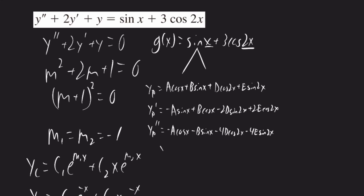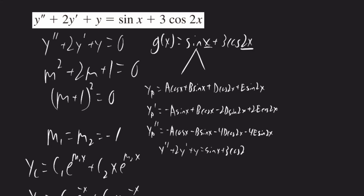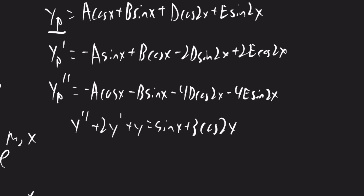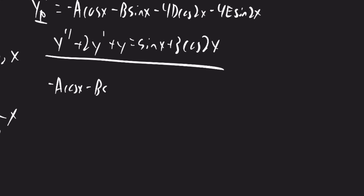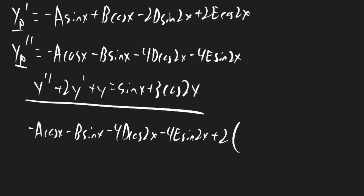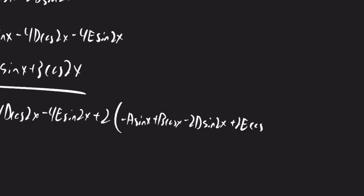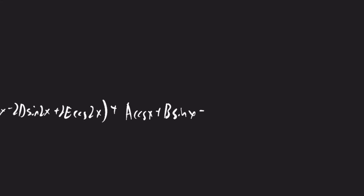The original differential equation was given as y double prime plus 2 times y prime plus y is equal to sine x plus 3 times cosine 2x. Because yp is a solution to this differential equation, we can plug in yp, yp prime, and yp double prime into this equation. So yp double prime was negative a cosine x minus b sine x minus 4d cosine 2x minus 4e sine 2x, plus 2 times yp prime, plus yp, which was a cosine x plus b sine x plus d cosine 2x plus e sine 2x.